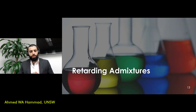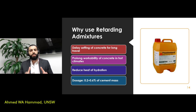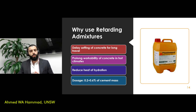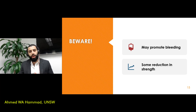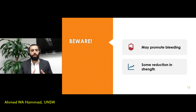The second type is the retarding admixture. These admixtures delay the setting of your concrete, which is important when traveling long distances to maintain the concrete in a workable state. They also reduce the heat of hydration, which slows down the hydration reaction and causes the concrete to take longer to set. The dosage is 0.2 to 0.6 percent of cement mass. Overusing retarders can lead to bleeding and some reduction in concrete strength.